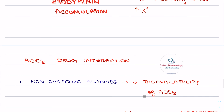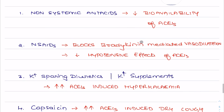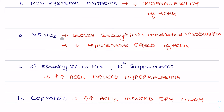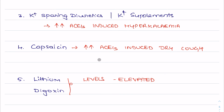Moving on to drug interactions of ACE inhibitors: antacids reduce the bioavailability of ACE inhibitors. NSAIDs such as indomethacin block bradykinin-mediated vasodilation, thereby decreasing the hypotensive effect of ACE inhibitors. Potassium-sparing diuretics or potassium supplementation aggravate ACE inhibitor-induced hyperkalemia. Capsaicin increases ACE inhibitor-induced dry cough. Lithium and digoxin levels are elevated when used concomitantly with ACE inhibitors.